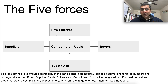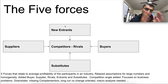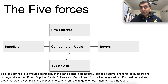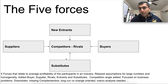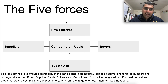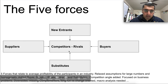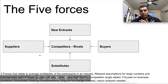Porter also added new startups and new entrants into the equation — companies that will disrupt a niche and take up market space from you. And then there are substitutes: if the price of butter goes up, margarine is a substitute. If you're in the butter industry, you have to look at the substitute effect as well. So Michael Porter added these three new layers: new entrants, competitors, and substitutes. Each of these five forces has a huge impact on profitability.